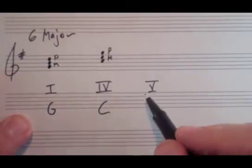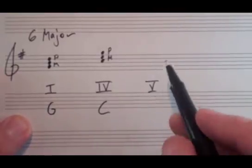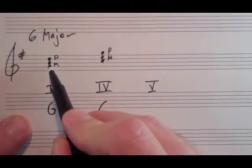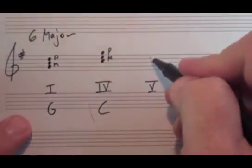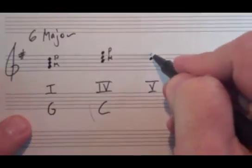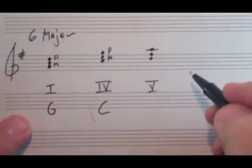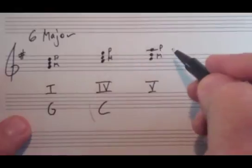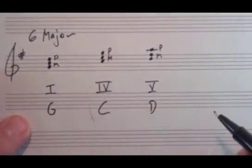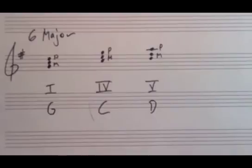Now, the last one we need to deal with is the fifth degree of G major. So we can count up the scale five from G: G, A, B is 3, C is 4, and one more would be D. So we're going to build our triad on D, and again we analyze it. D to F sharp is a major third, D to A is a perfect fifth, which makes this a D triad. So in G major, with this process, we have learned that the three primary triads in G major are G, C, and D.